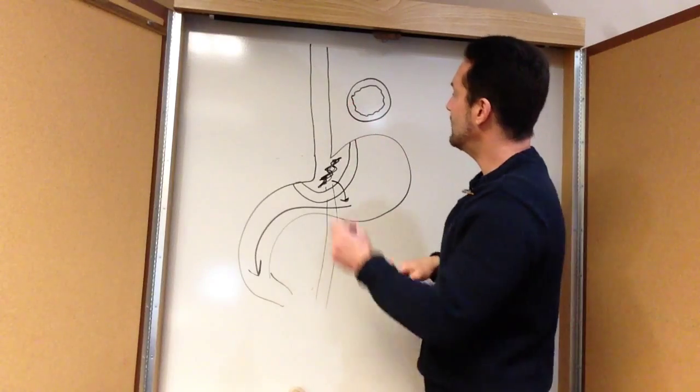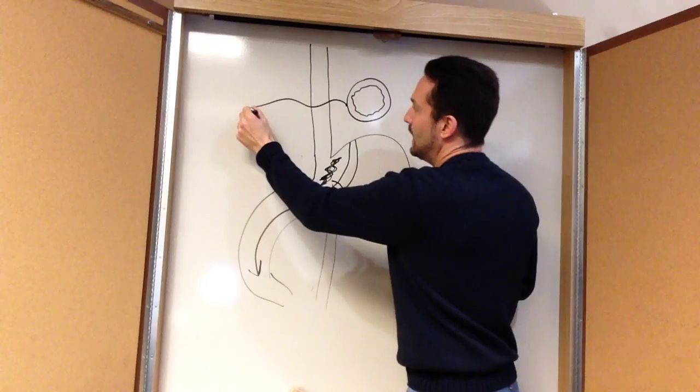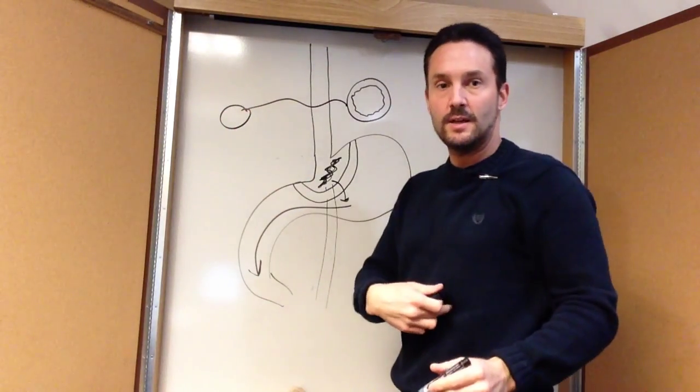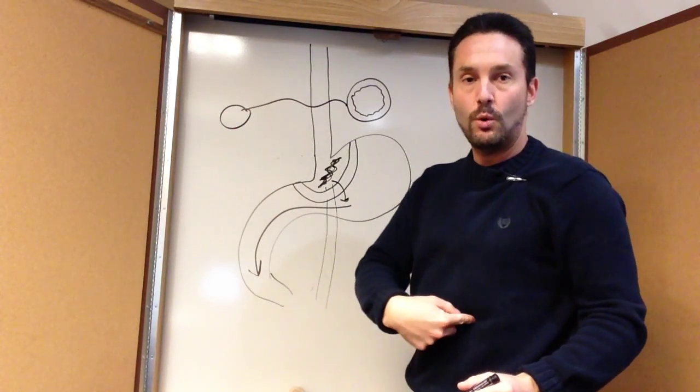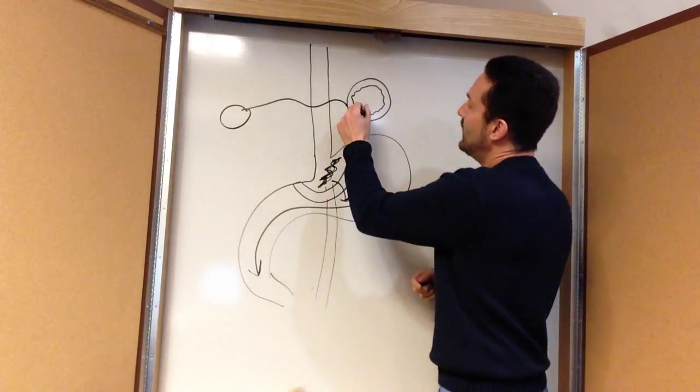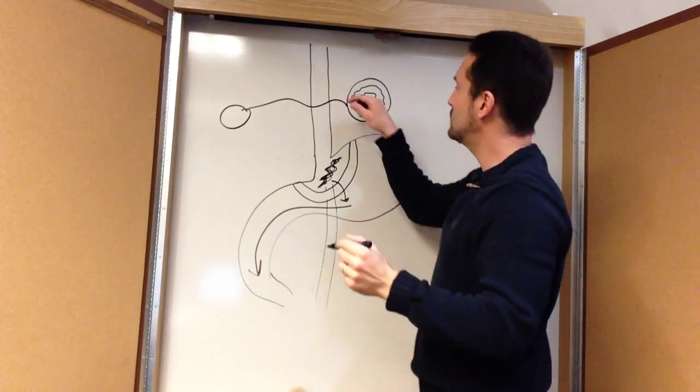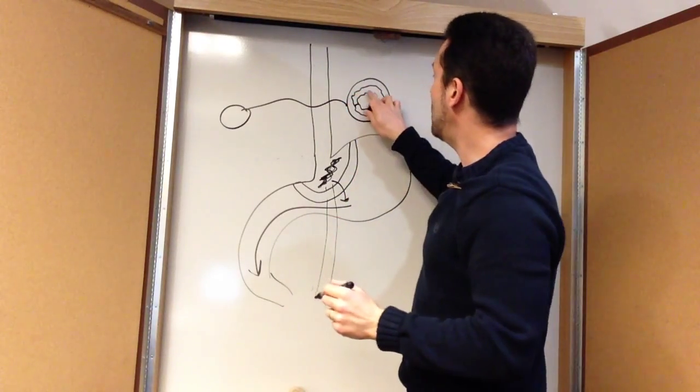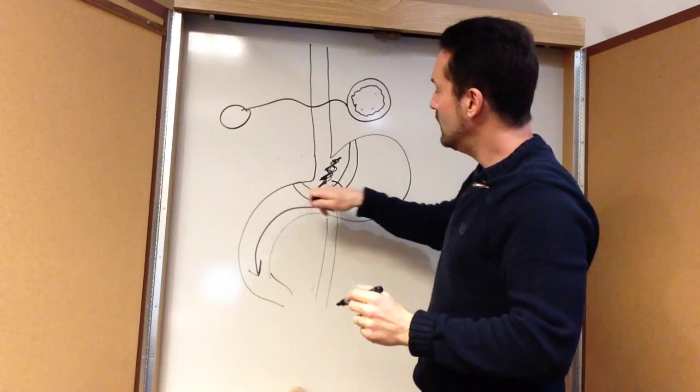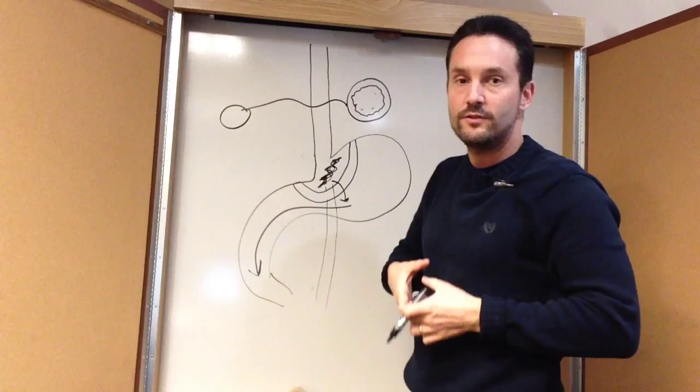With the lap band, that's a balloon in there. There's a little tube that's attached, and there's a port that they put on the skin, and they can actually take a needle and put water in or take water out by just going under the skin. And what that does is that inflates this balloon and makes the opening smaller. They can take water out and make the opening greater, so they can change the effect of how much of a restriction you have to eating.